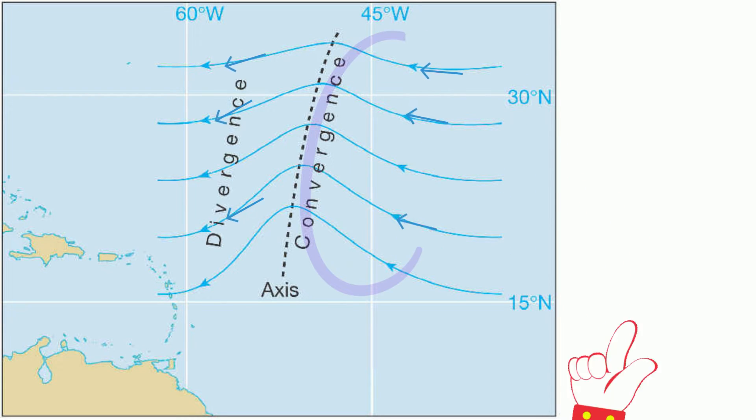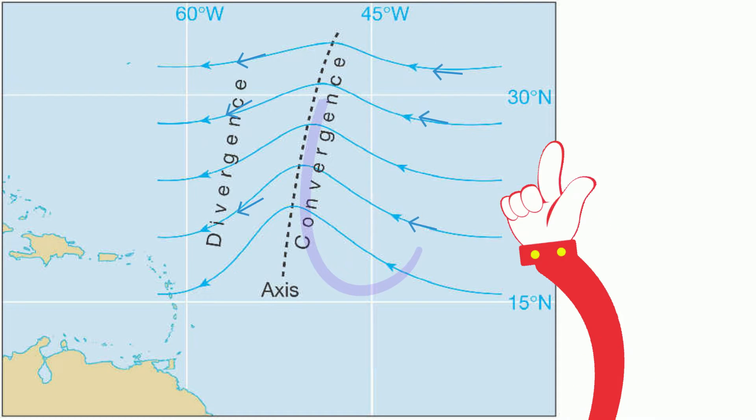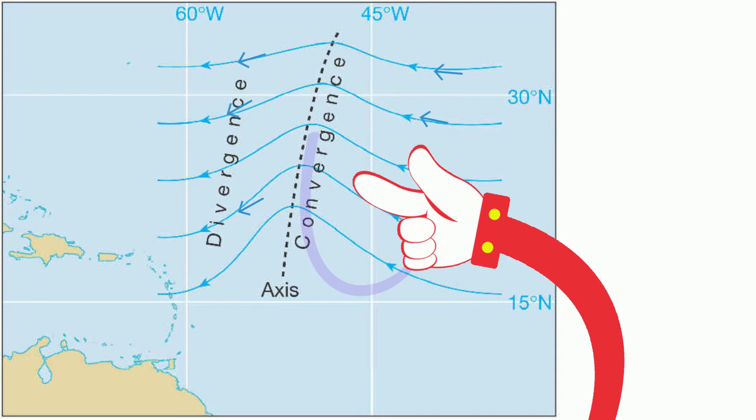Air is also rising in this part of the wave, and this is due to the convergence on this side. As such, conditions are still a bit unstable.